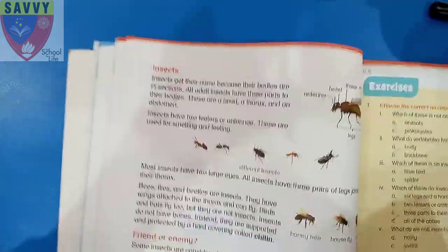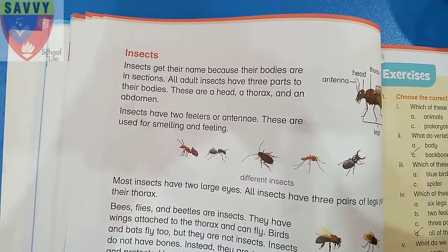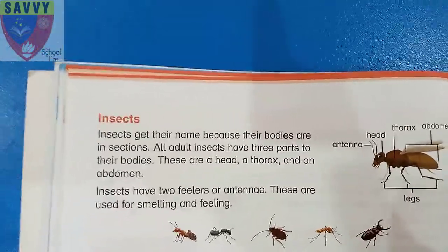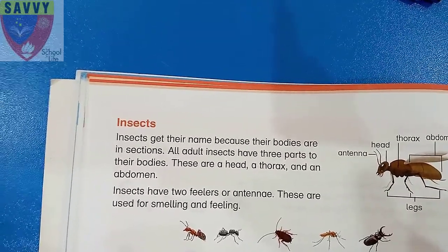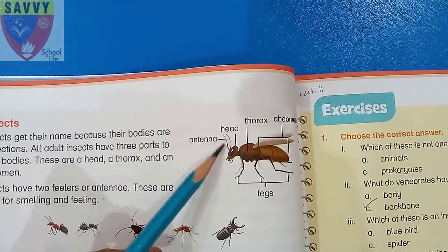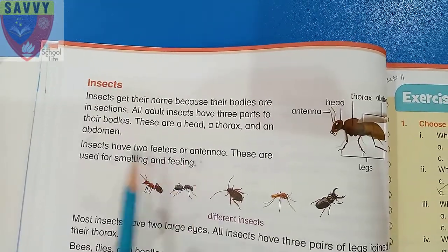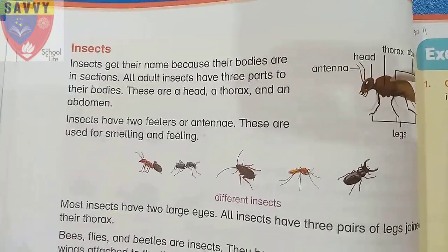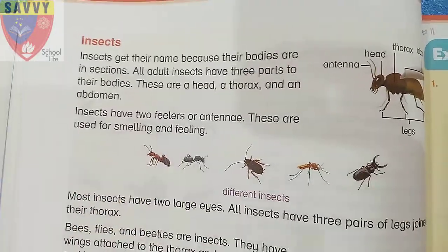Next topic: insects. Insects get their name because their bodies are divided into sections. Adult insects have three body parts: a head, a thorax, and an abdomen. Insects also have two feelers called antennae, which are used for smelling and feeling. Most insects have two large compound eyes.